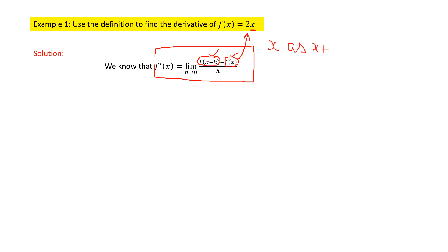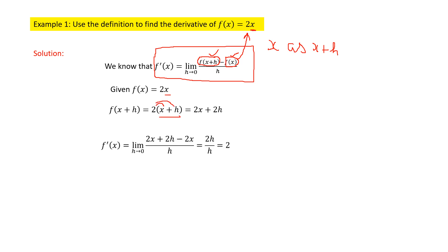If I have only one x, I have to change that x to x+h. If I have more than one x, then I need to change every x into x+h. Given f(x) = 2x, what is f(x+h)? In this function, if I replace x by x+h, that will give you 2(x+h), which equals 2x + 2h. Now just substitute the f(x) value and f(x+h) value into the definition.